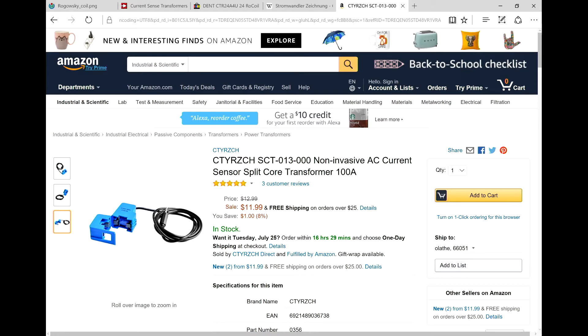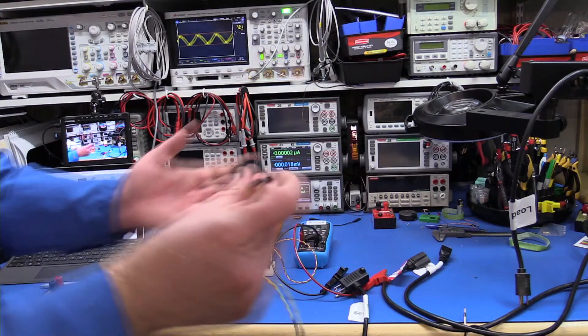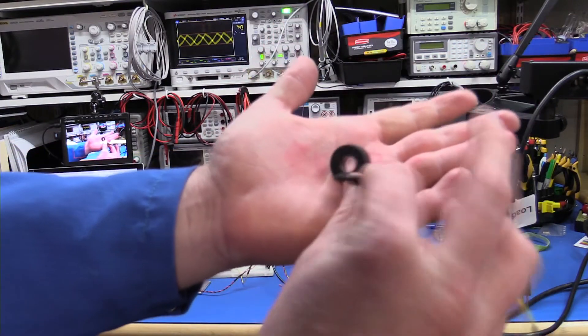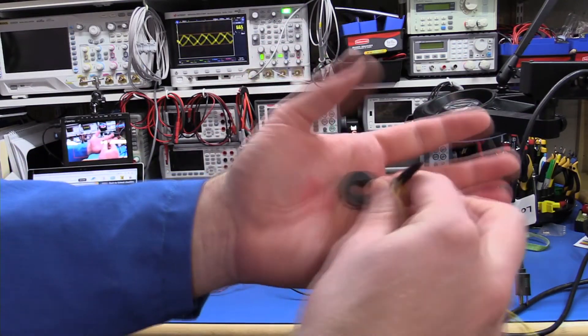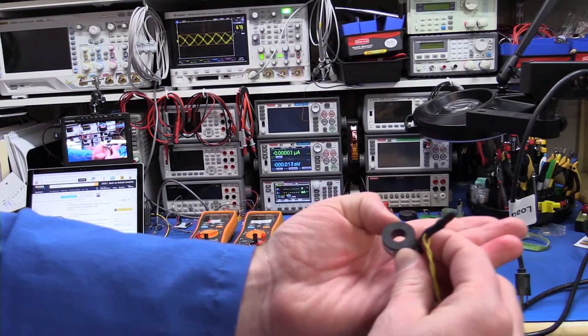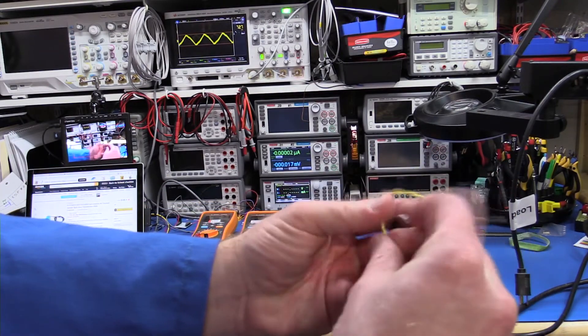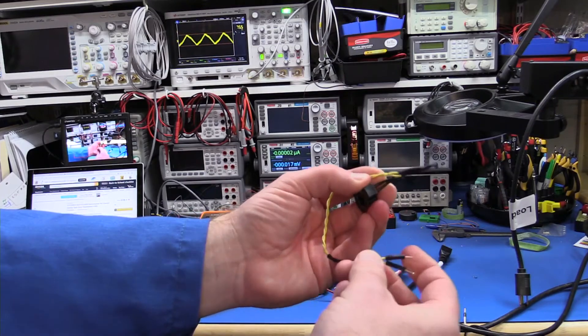So that's what we're going to do with this. Here's the current transformer that I'm going to use. It was five or $6 and we're just going to run the mains lead through the center here and then use this to trigger a circuit.